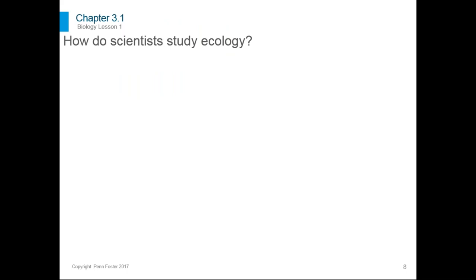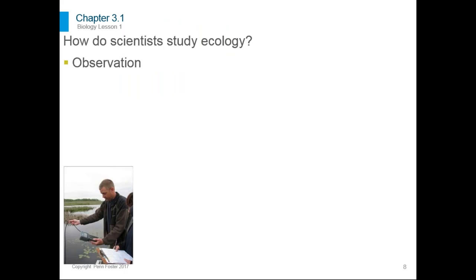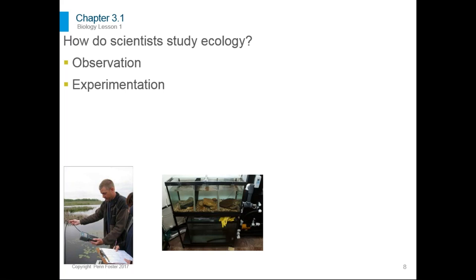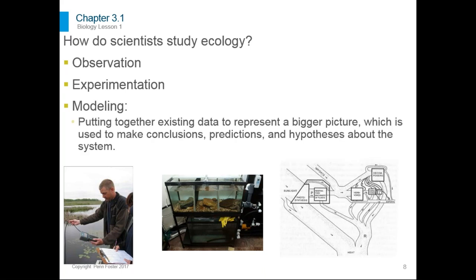The first method is observation — scientists observe the presence of living organisms, changes in their populations, behaviors, and the ecosystem. The second is experimentation: ecologists set up controlled experiments with small populations to see the effects of different variables — for example, whether salamanders search for food less when fish are present. The third method is modeling: putting together existing data to represent a bigger picture, used to make conclusions, predictions, and hypotheses about the system.